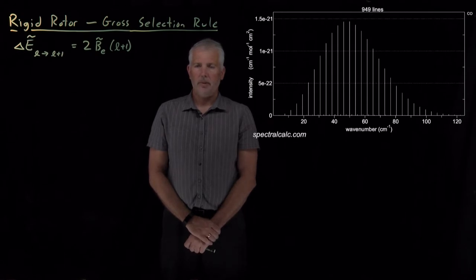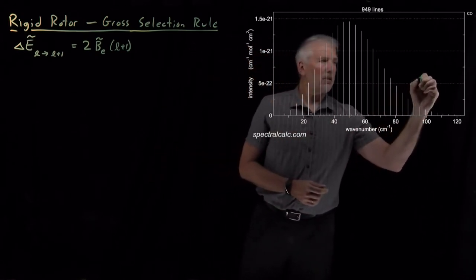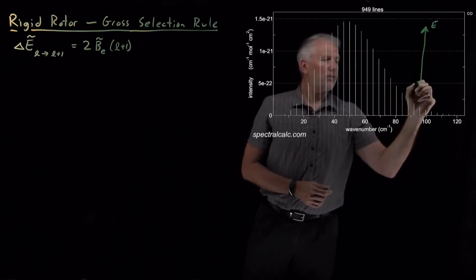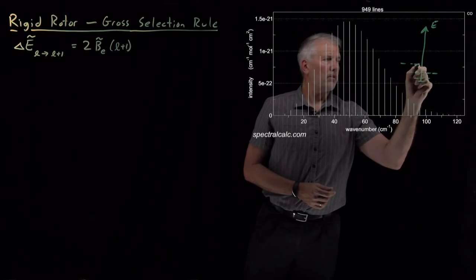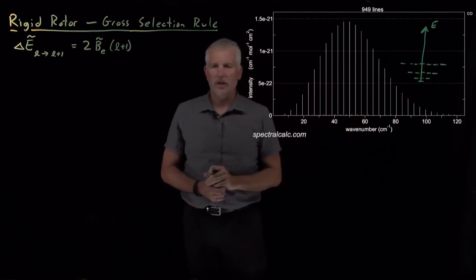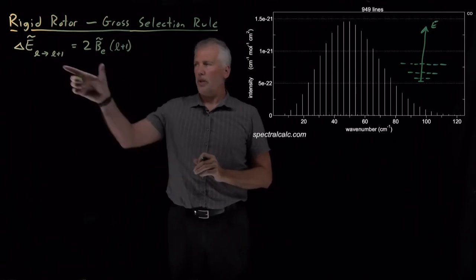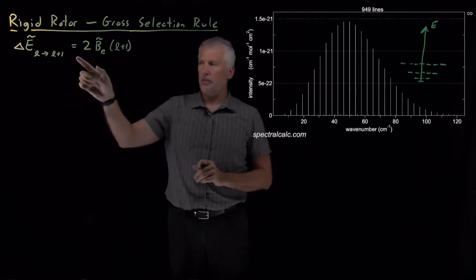If we have a diatomic molecule with several different energy levels, so here's a molecule with several different rigid rotor style energy levels that it can occupy, we've determined that the energy difference between those energy levels can be written with this formula.